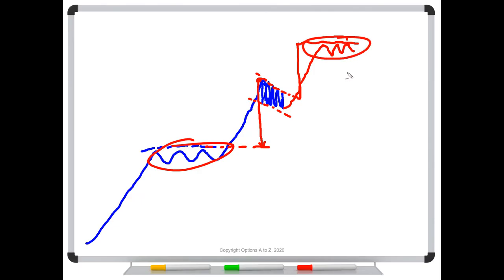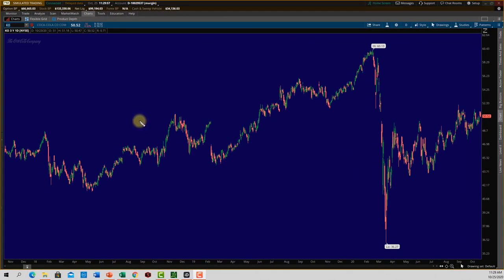So now that we've covered the basics of flags and pennants, let's go over to the thinkorswim platform and take a look at some. Okay, so now we're over into the thinkorswim platform. I'm looking at Coca-Cola, ticker KO. And if we go back to November of 2018, start of 2019, we started to get some resistance through here, got it again through here and then through here. And then we start going on this little breakout. So this is going to be a little breakout. And then we started to go through this little consolidation period. So if you draw some trend lines through here and right there, there's your flag. So it's a little easier to see that it's fitting inside of a rectangle instead of a pennant, kind of a V shape.